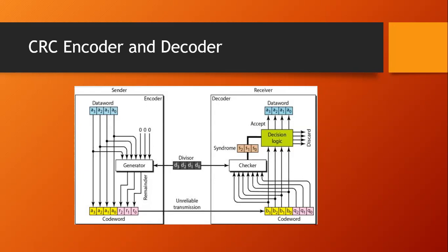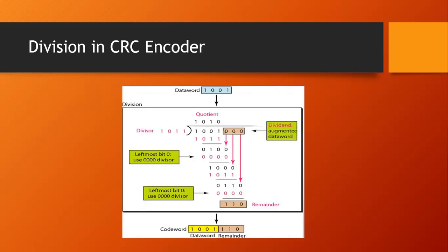Now we will learn this through a numerical example. We are given the data word 1001 and the divisor 1011. We have to augment some bits to this data word. The number of bits augmented depends on the number of bits in the divisor. The divisor has four bits, so the augmented bits are four minus one, that is three bits. So three bits are augmented, making the dividend seven bits and the divisor four bits. Now the division will take place.